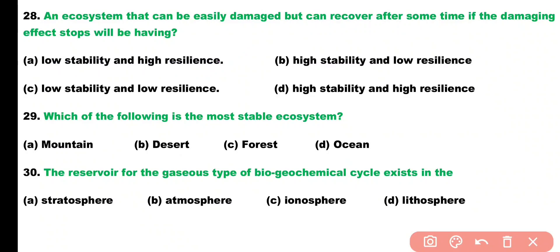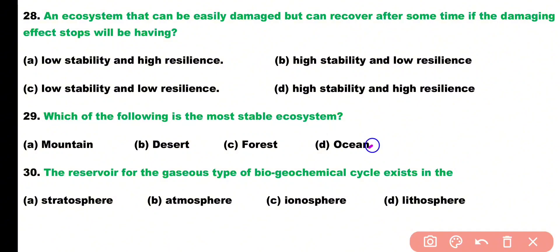Question number twenty-nine. Which of the following is the most stable ecosystem? Options: mountains, desert, forest, or ocean? Correct answer is option D. Oceans are the most stable ecosystem.